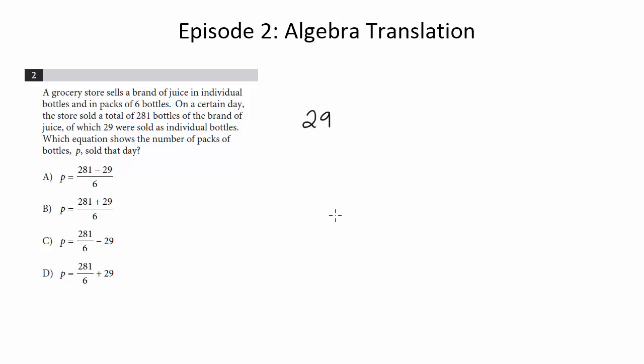Well, if we start with our 29 individual bottles, and if we add them to six times P, again P is the number of packs, each pack contains six. So this quantity, 6P, is the number of bottles in those packs.